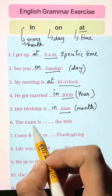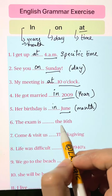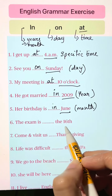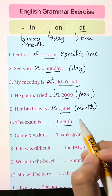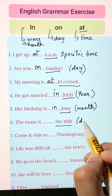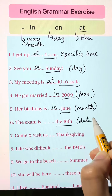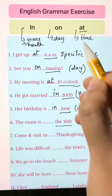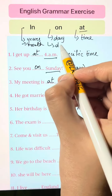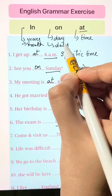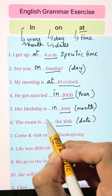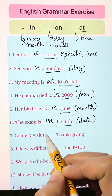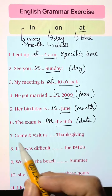The exam is blank the 16th. Here you have the date mentioned. For particular dates we use 'on.' The exam is on the 16th.